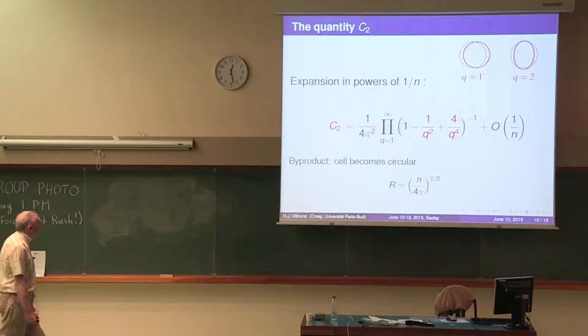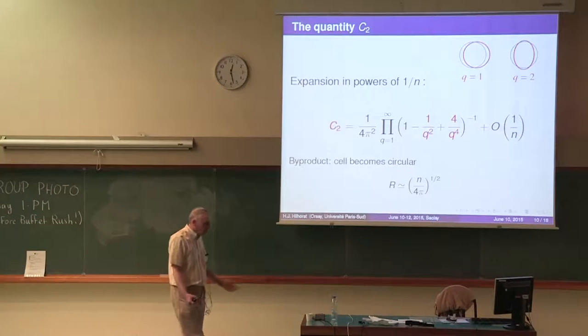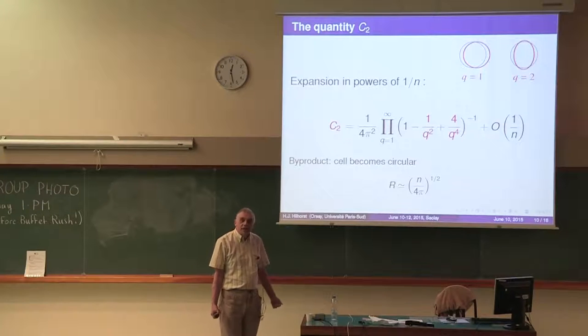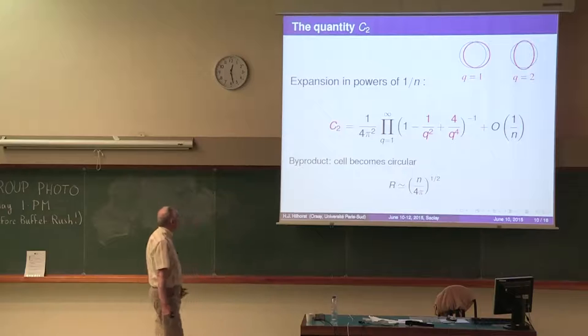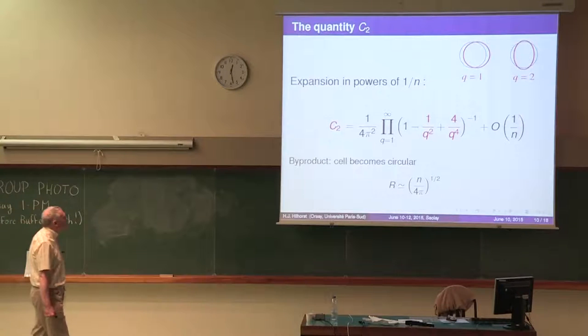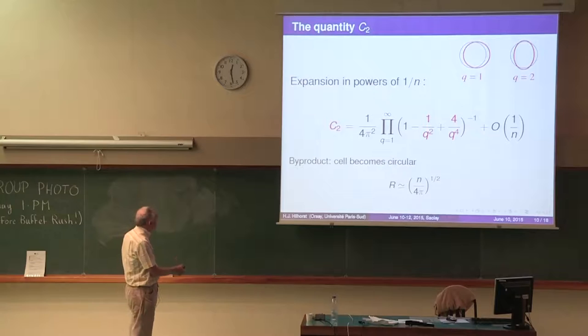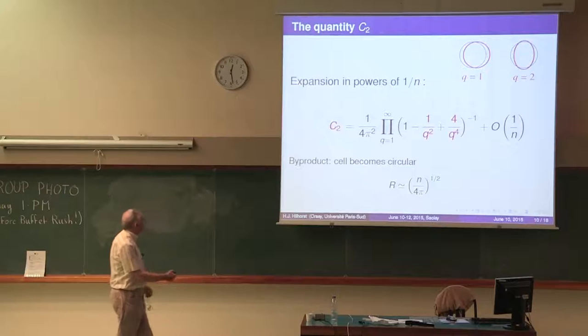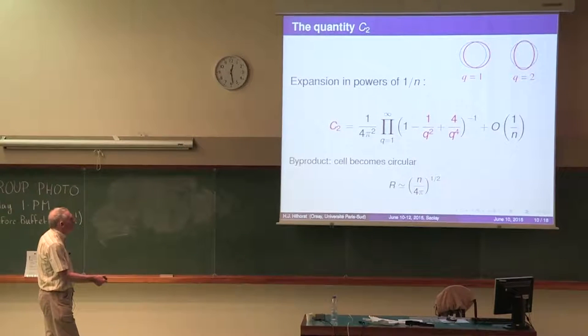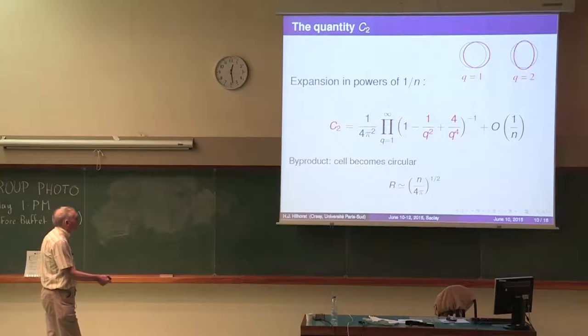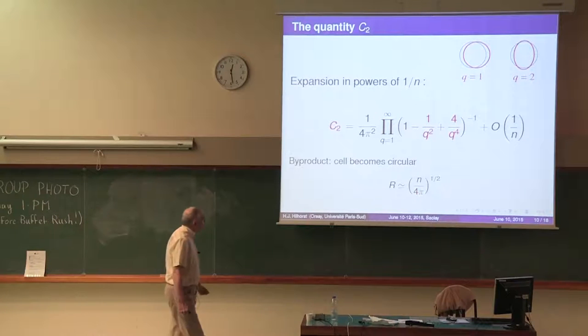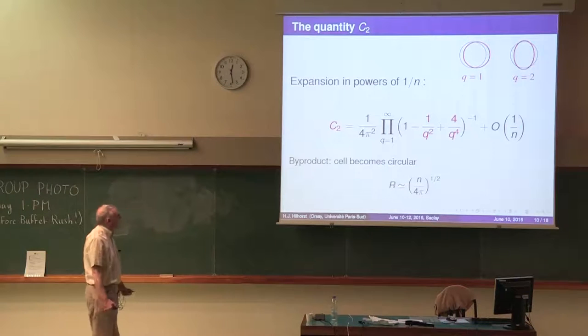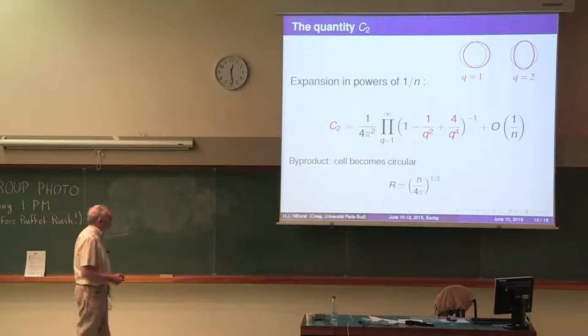That calculation completed, we have the answer to the question: what is the asymptotic behavior of the sidedness probability P(n) in the limit of large n? That calculation gives us much more than this simple answer; there are many byproducts. One byproduct is that effectively, as had been supposed, the many-sided cell becomes circular. The circular shape is where you have the maximum in phase space, and it becomes circular of a radius that is well-defined: it goes as the square root of n divided by the square root of 4π. So we now know what the size is of the spherical cell in the limit of large n.